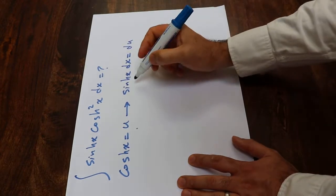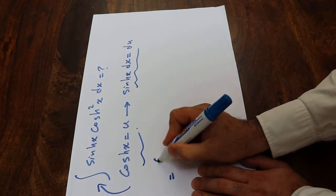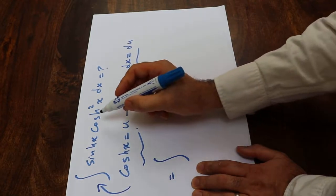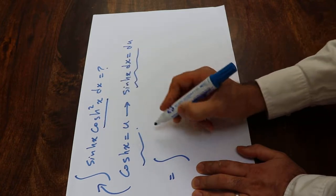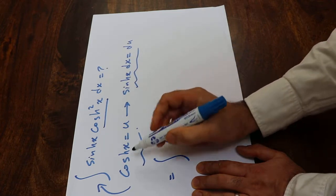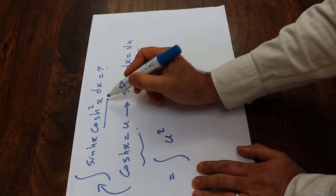So all you need to do here is to substitute these two expressions into this integral. So that will be equal to, instead of s squared hyperbolic cosine x, I simply write u squared, because hyperbolic cosine x is u, therefore s squared hyperbolic cosine x is u squared.